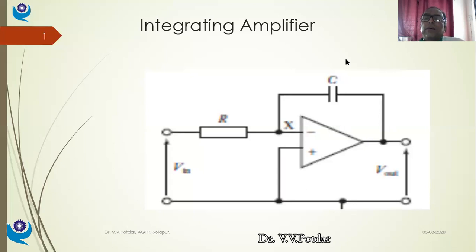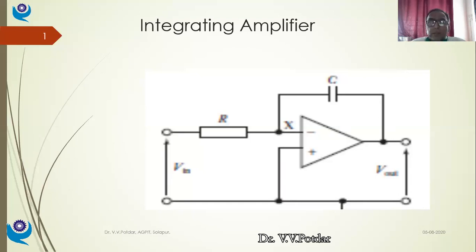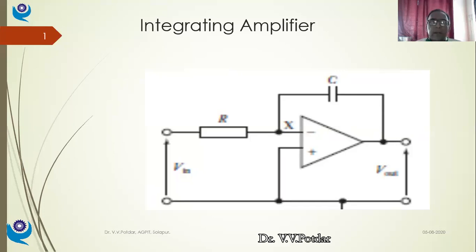Good morning, friends. Last class we started with signal conditioning devices. Whatever signal we get from a sensor and transducer, it should be properly conditioned or processed so that it can be used by the actuator in a mechatronic system. We discussed operational amplifiers in the last class. After operational amplifiers, we'll be studying conversion devices like A-to-D converters, D-to-A converters, and other signal modifying devices.